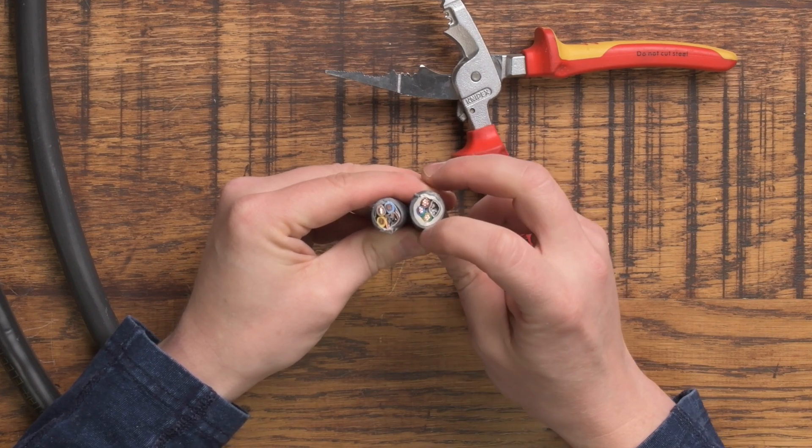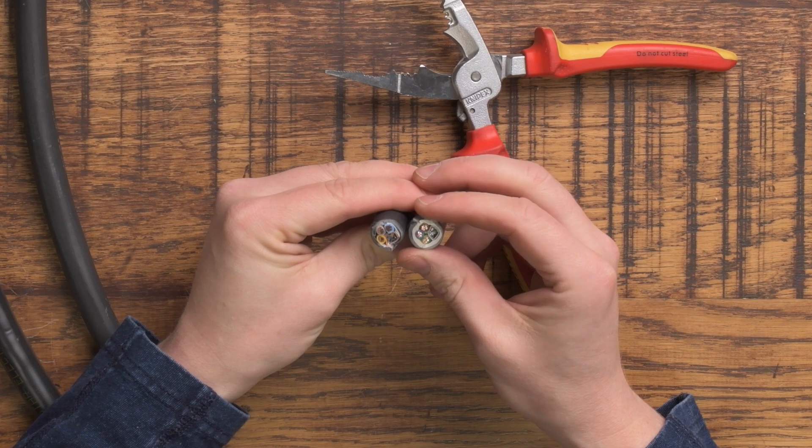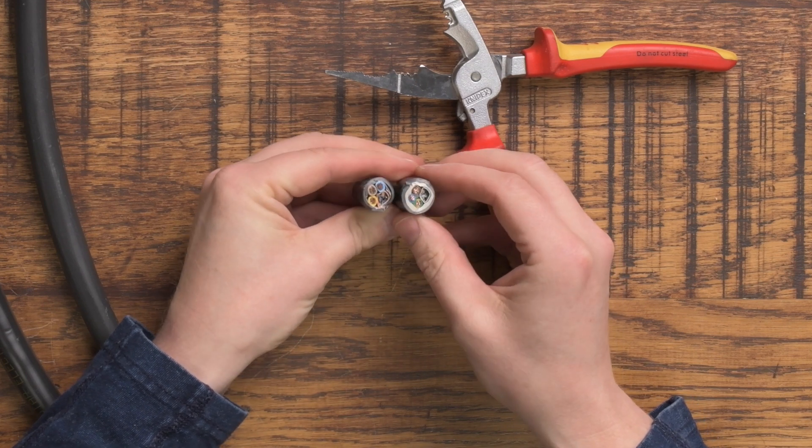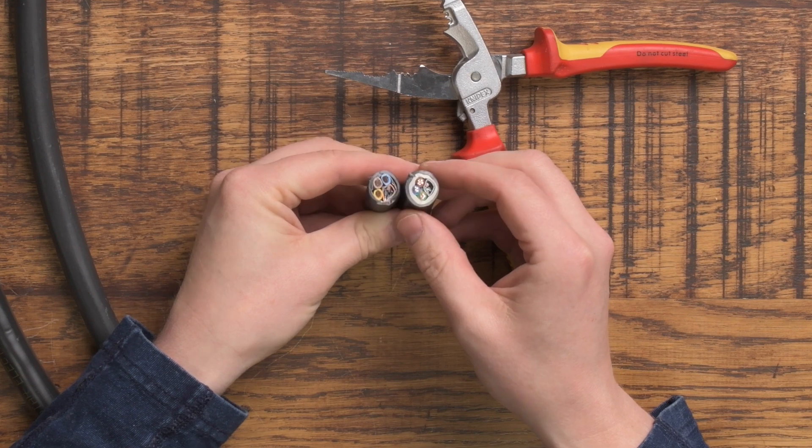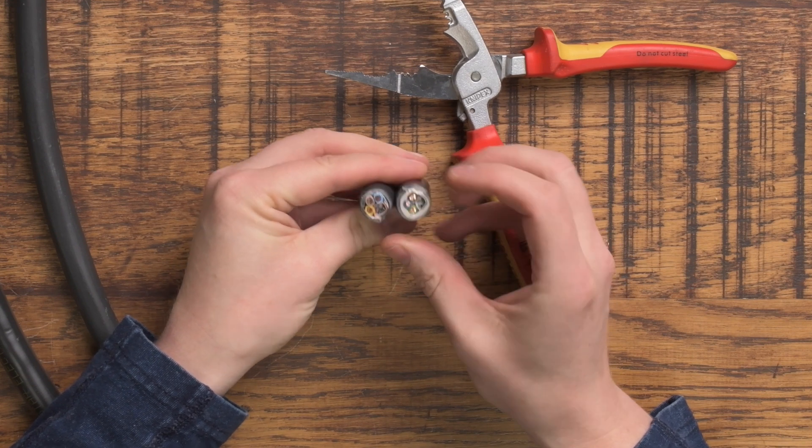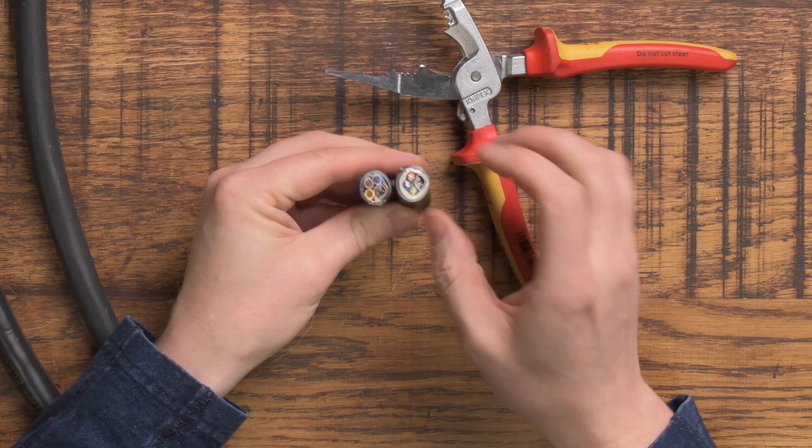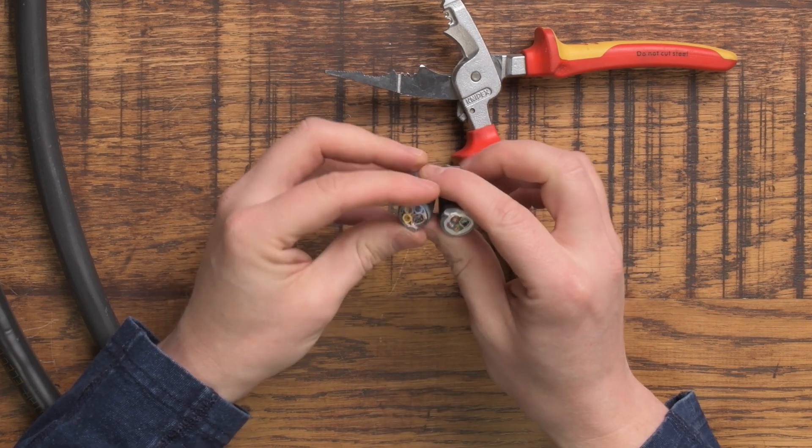Whereas Doncaster Cables has this lovely white bedding inside which really protects the wires inside very well. So that's the first significant difference - there's more bedding, more stuff inside this one than inside the alternative version.